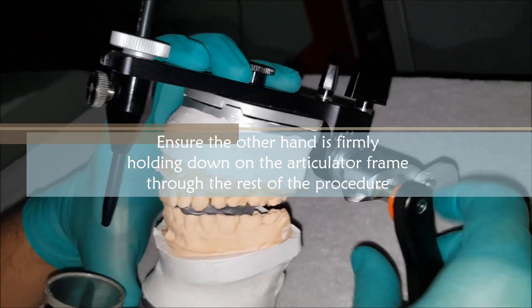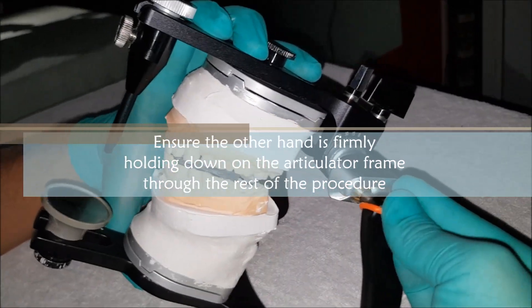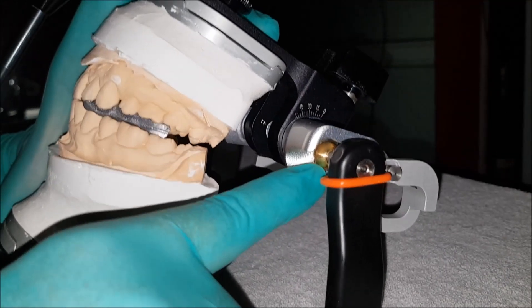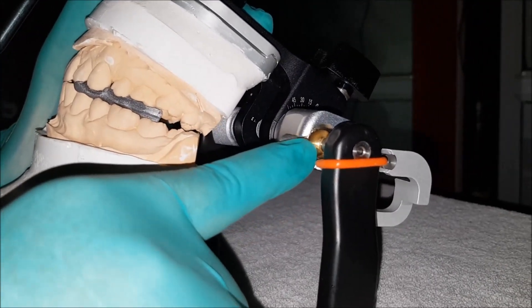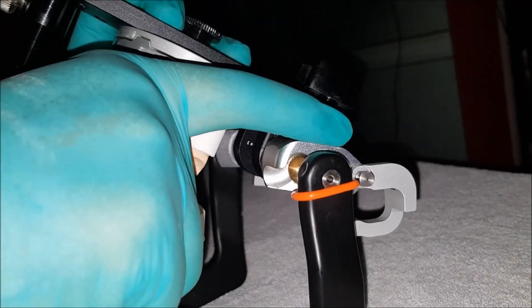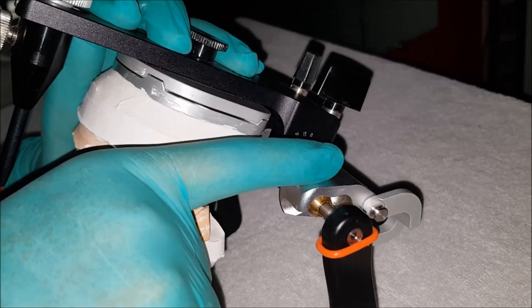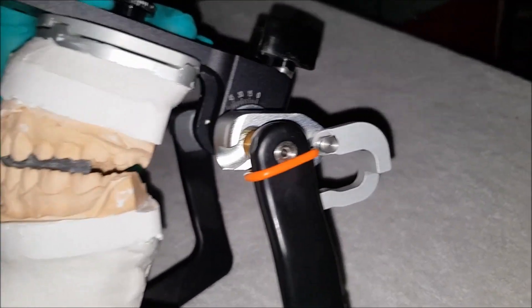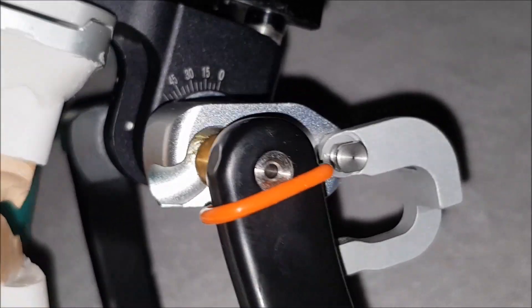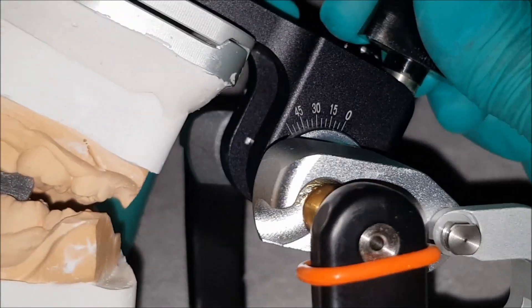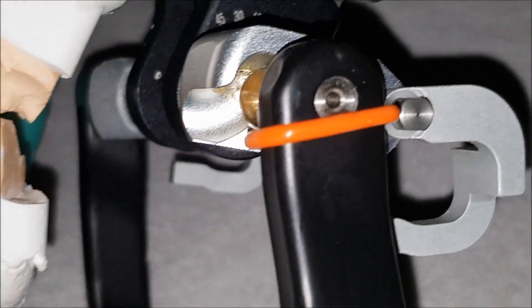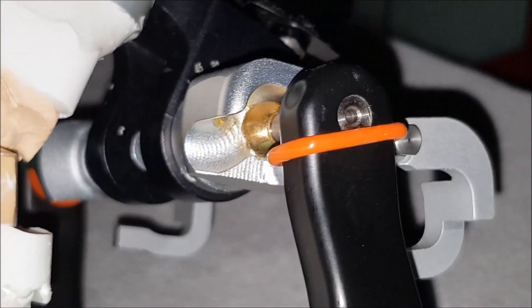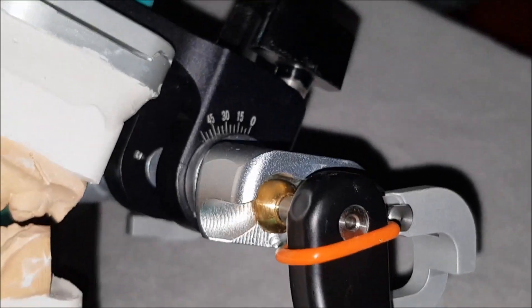At this point, when you look towards the back end of the articulator, you are able to appreciate that the ball is no longer in the fossa, but it has translated out of the glenoid fossa because this is a protrusive relation. Now, as I zoom in, you will be able to appreciate that the ball here is not actually in contact with the fossa. If you look closely, there is a slight gap between the top of the ball and the top of the fossa.